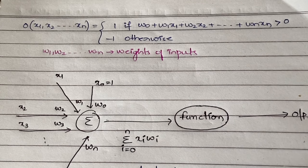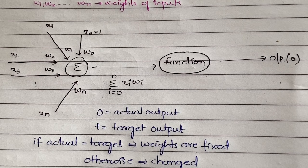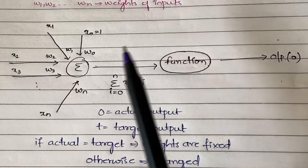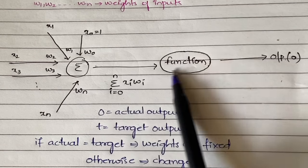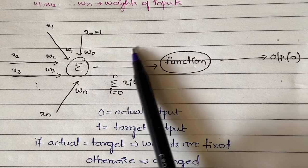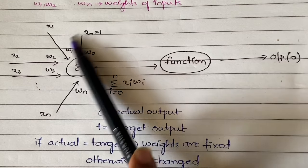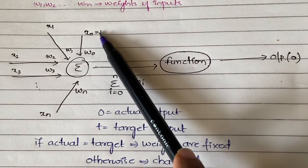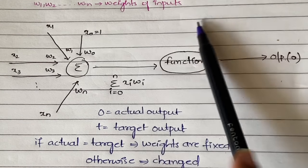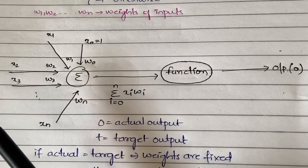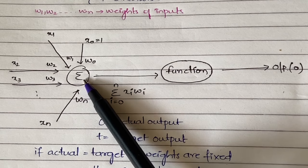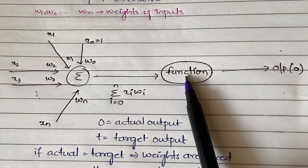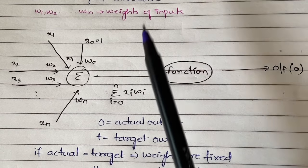Now let's see how the perceptron training rule works. A node has two parts: summation and activation function. In the summation part, all the inputs along with their weights are taken. By default we take an initial input x0 equal to 1 with weight w0, so x0 times w0 equals w0. The summation function adds up all the inputs and sends the result to the activation function.